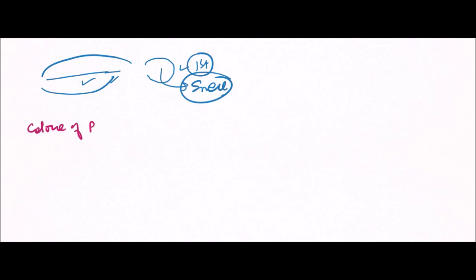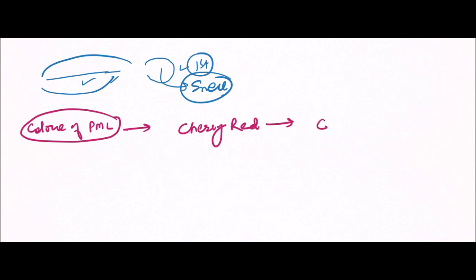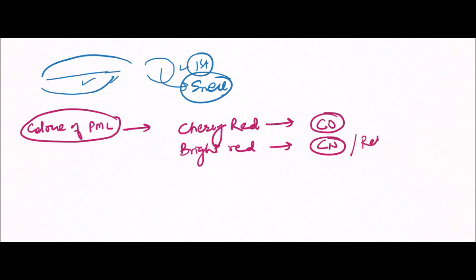The second important finding is the color of post-mortem lividity (PML), also known as hypostasis or sedimentation. There are different colors of PML in different poisonings. The cherry red color of post-mortem lividity is seen in carbon monoxide poisoning. The bright red color is seen in cyanide poisoning, and also in refrigerated bodies, where hypothermia decreases oxygen dissociation from hemoglobin.